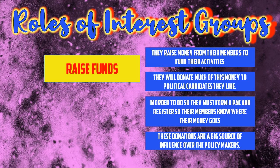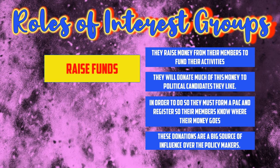Just like political parties, interest groups have to raise funds. They have to operate day to day, so they raise money from their members and from people who share their concerns. They often use those funds to donate to political candidates and help fund campaigns. To do that, they have to form a PAC and register with the government so we can know which interest groups are influencing which candidates. These donations become a big source of influence over policymakers, who will often do what interest groups want in exchange for campaign funding.